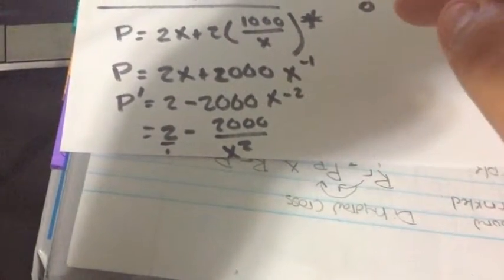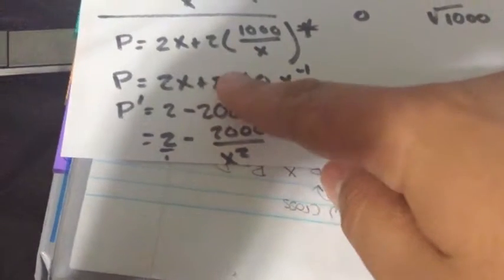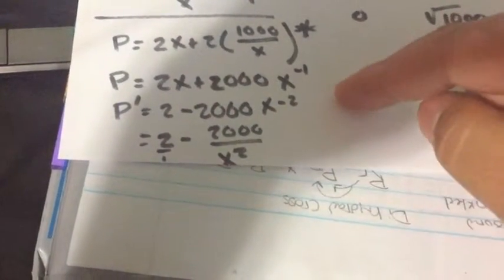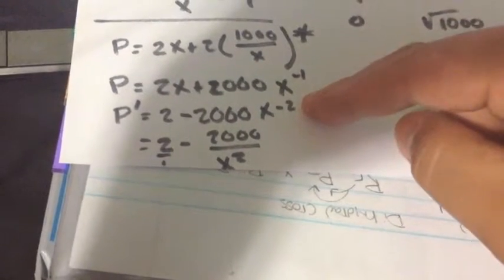So you find the derivative. So it would be, the derivative of 2x is 2. So minus 2000 x to the negative second.